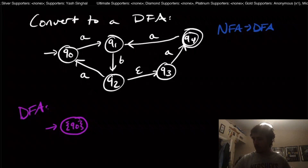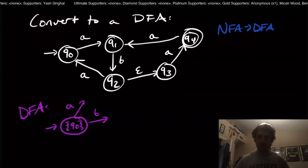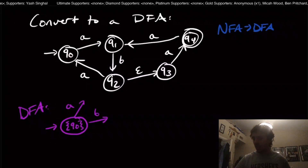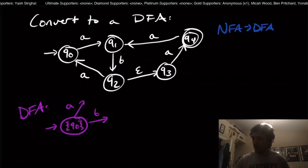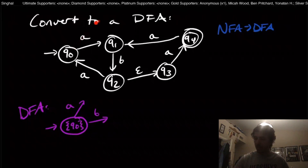Now we've got to figure out where this state goes on each of the inputs, which are A and B. The B transition is easy, because all the states in this set — just q0 — don't go anywhere on input B at all. q0 doesn't go anywhere on B.